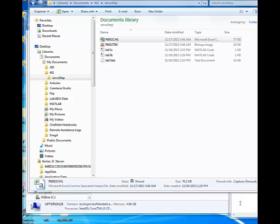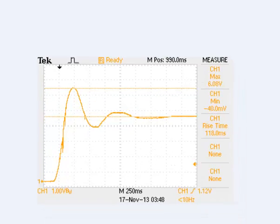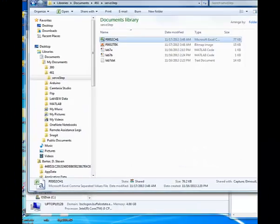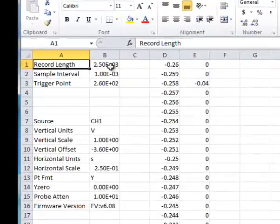Copy the Excel file and the picture file into the folder with the MATLAB scripts. Open the picture file to make sure that it really is the right step response. Open the Excel file. Notice the sample interval.